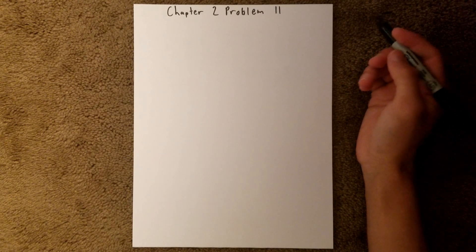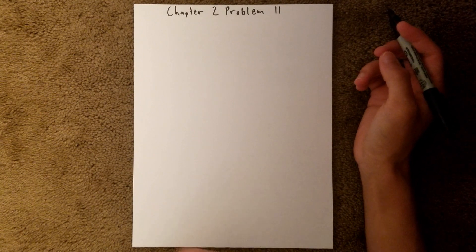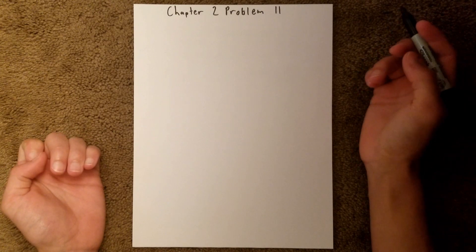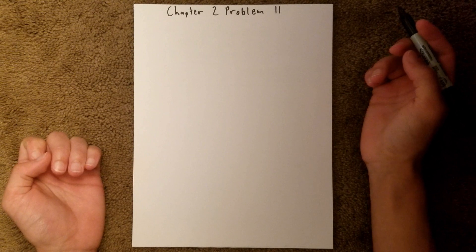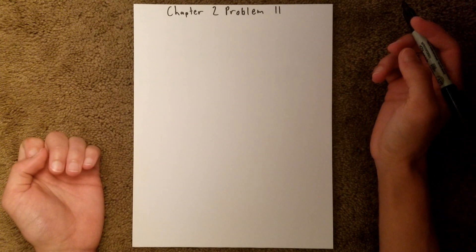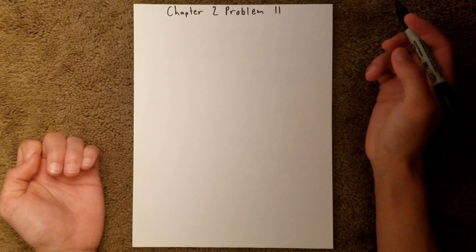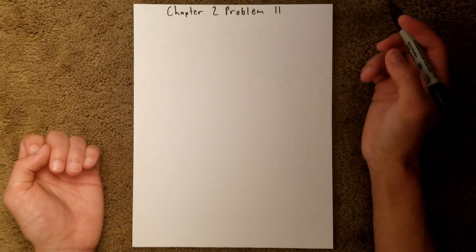Chapter 2 is all about tools of the trade, and Problem 11 wants us to find the apparent mass of cesium chloride that we would need to mass on a balance in order to have a true mass that we are given. So basically, this question is asking about buoyancy correction.